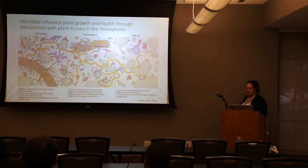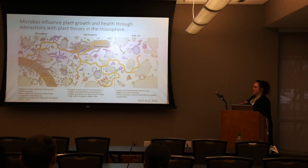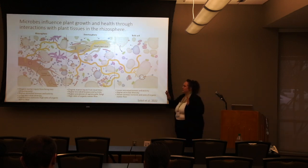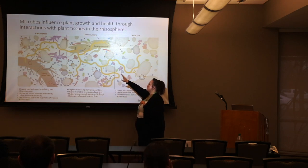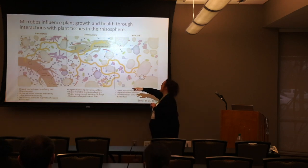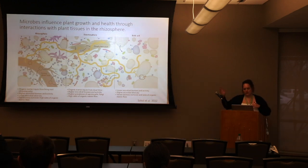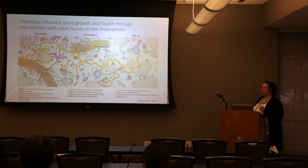Microbes in turn can influence plant growth through their interactions with plant tissues in the rhizosphere. The rhizosphere is the area right around plant roots where microbes live within or in close association with the roots, and also those free-living in the soil. As you can see from this image, the rhizosphere is very close to the living plant roots, then we get into the detritusphere with more decaying plant matter, and then the bulk soil.